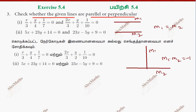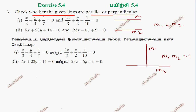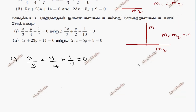If we have two slopes, we will satisfy the relation. First subdivision: the equation is x by 3 plus y by 4 plus 1 by 7 equal to 0. Now, the slope formula — suppose if it is ax plus by plus c equal to 0 — slope is minus a by b, that is minus x-coefficient by y-coefficient.